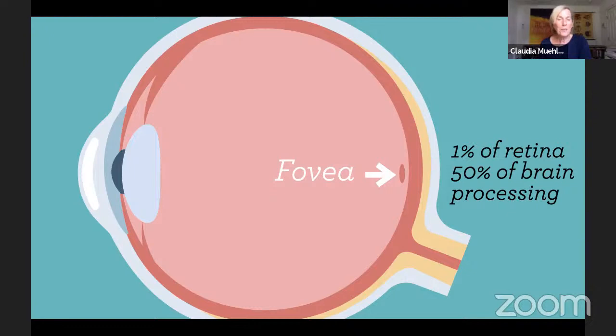In computer language, we're talking RAM. Imagine one tiny program on your computer using 50% of the processing speed. That's pretty crazy — unless you have a very slow old computer.